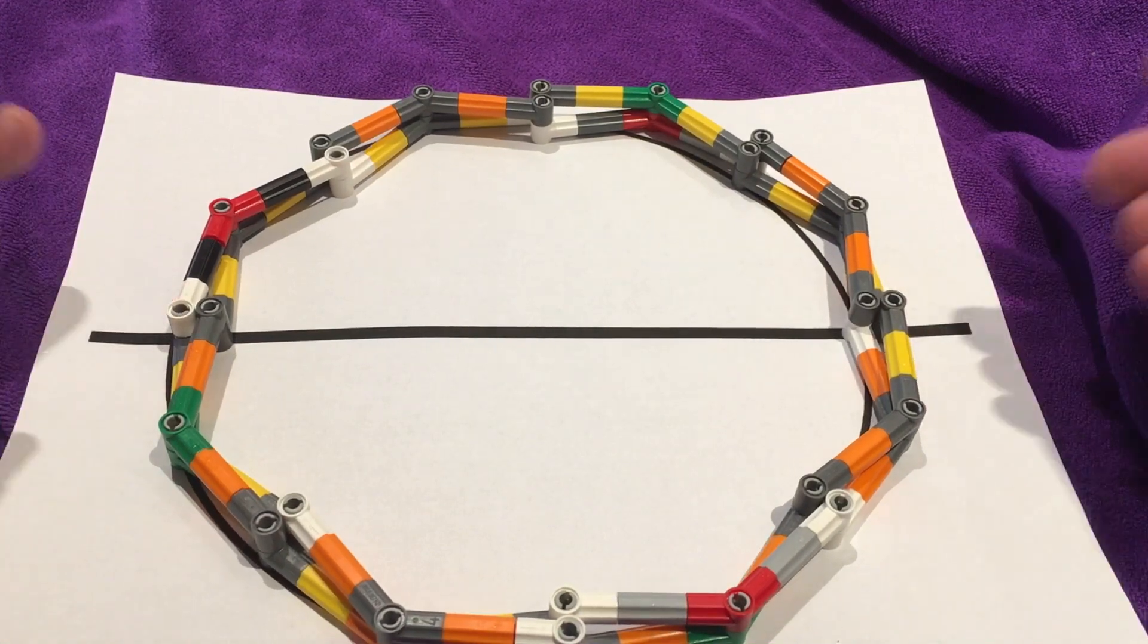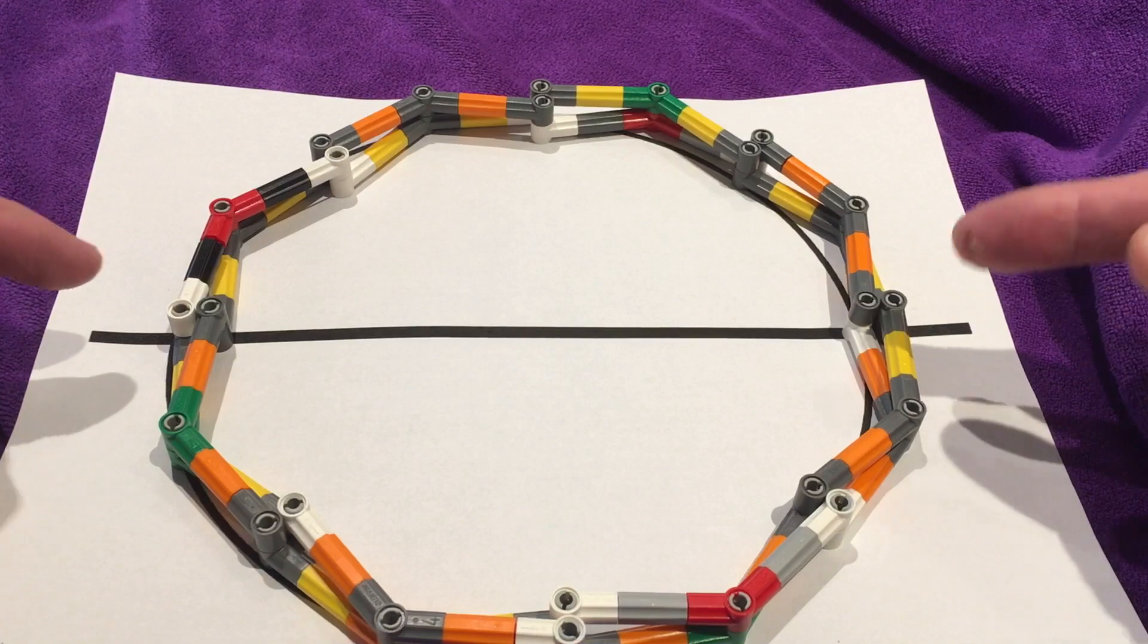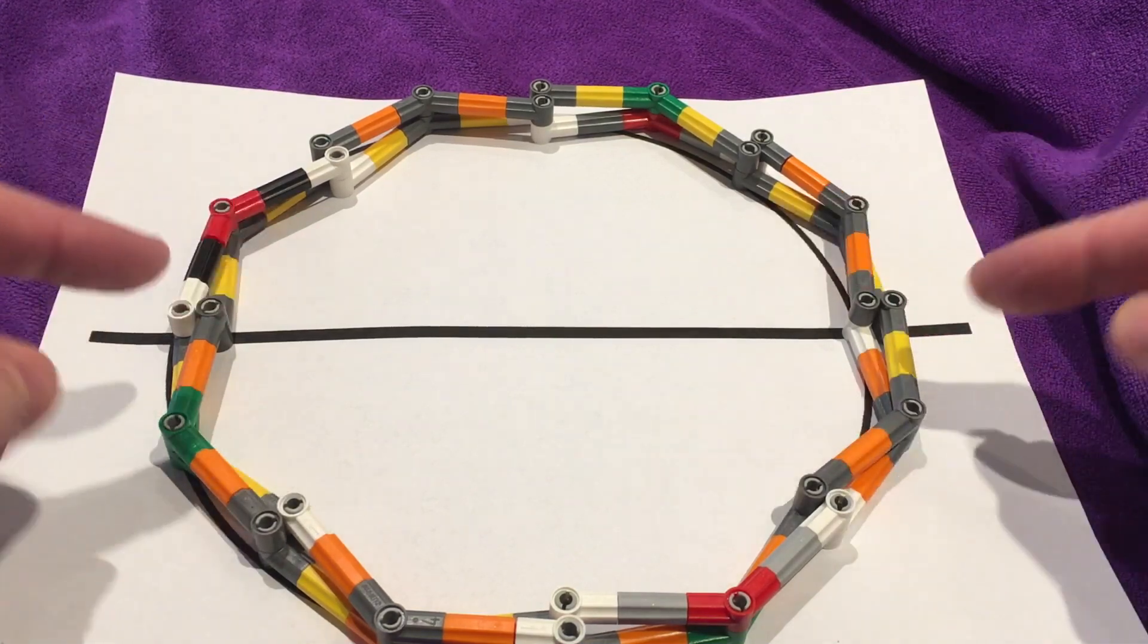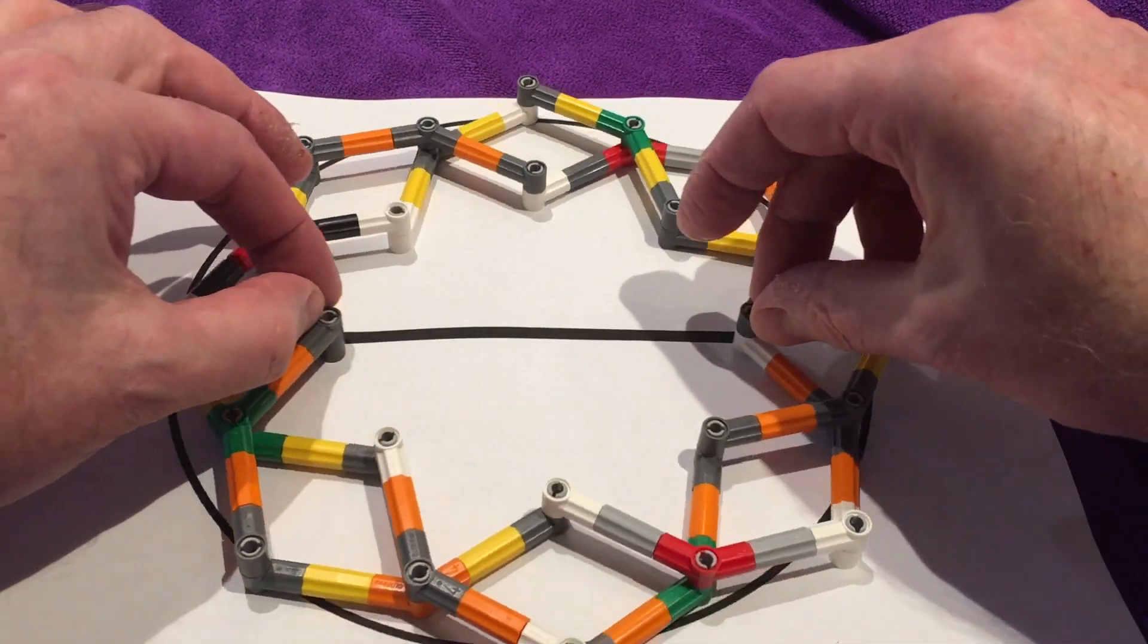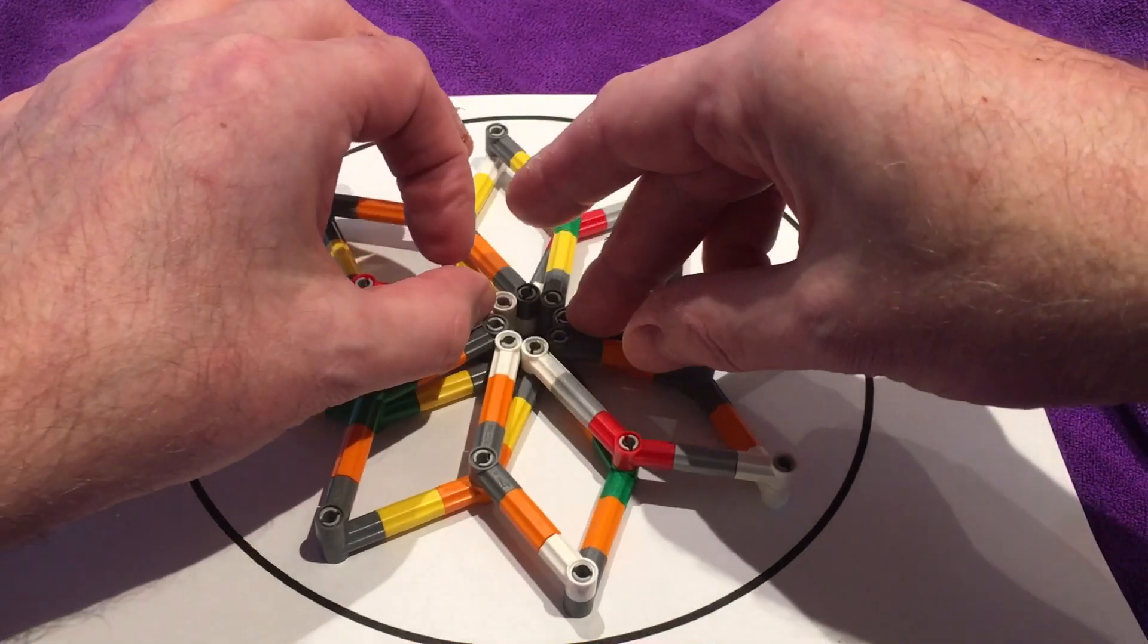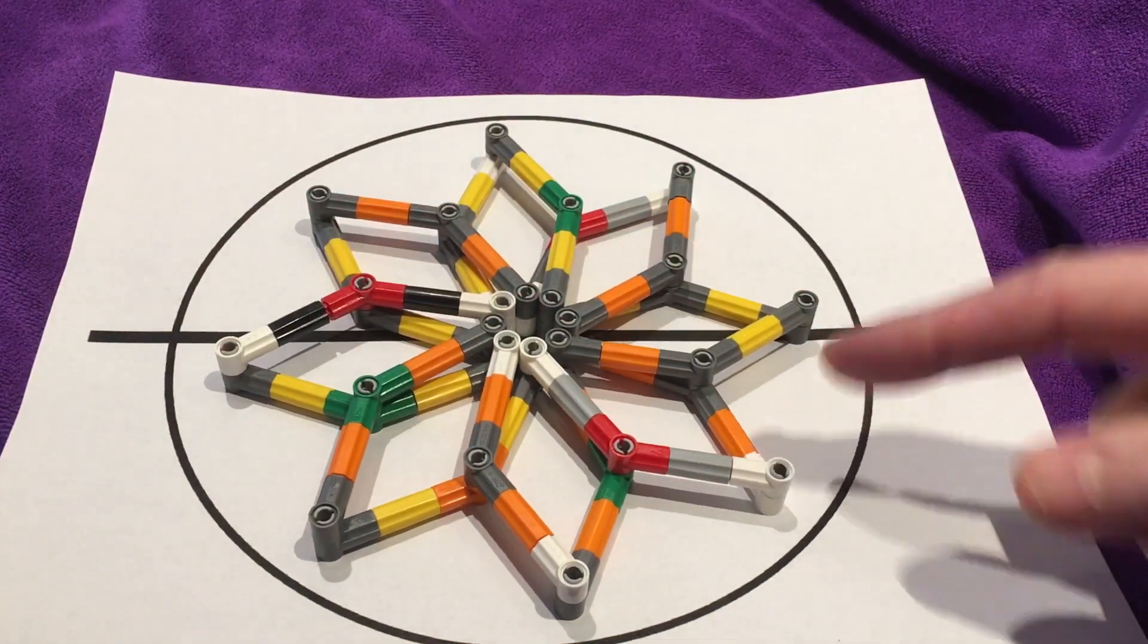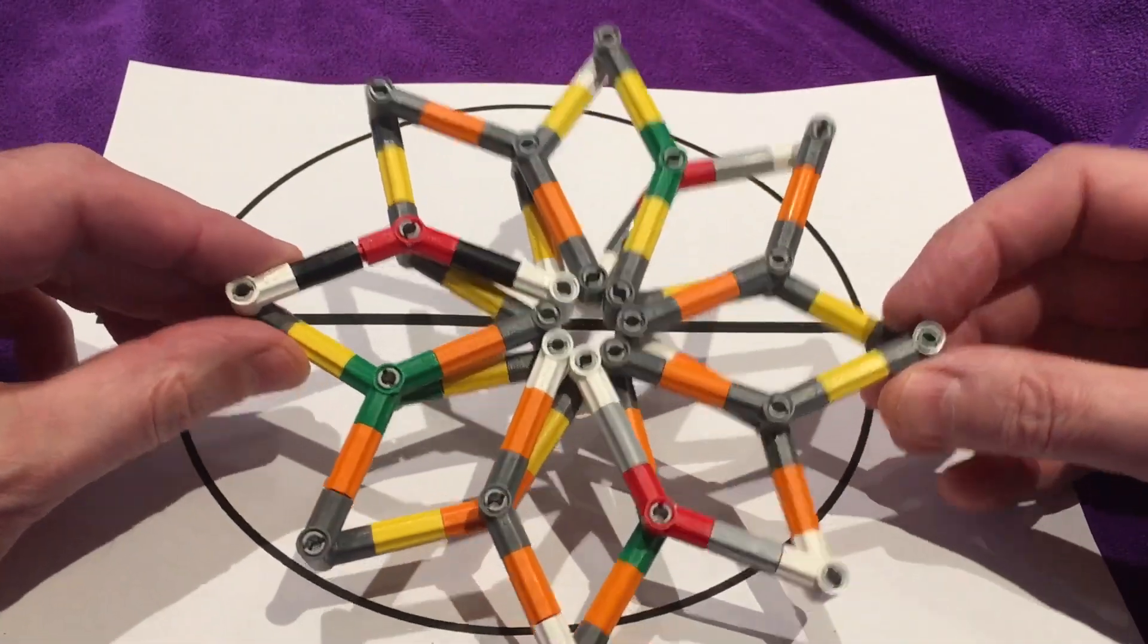Okay, we started out with something that looks like a flower. But now we have something that's much more like a circle. Now I can also move along that line this way. Now, if I take my fingers here and move these pieces inward towards the middle, again, I'm moving along this line right here, I change it back to the shape of a flower. And this Hoberman circle is the building block of our Hoberman sphere.